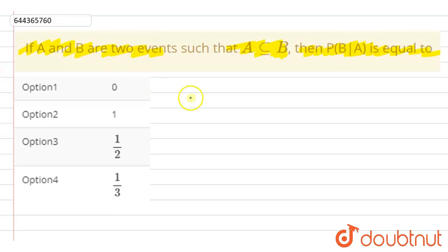So here in this question, it is given that A is subset of B or equal to B. What does that mean? Suppose this is set B, this is event B.